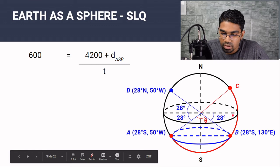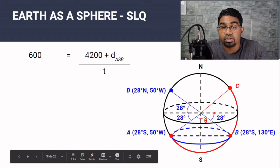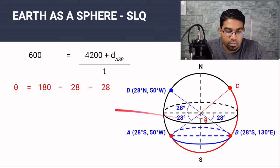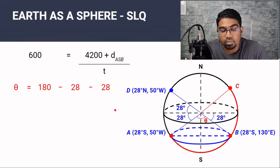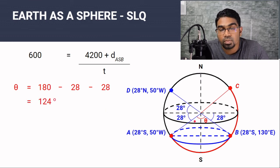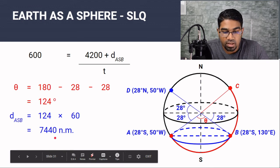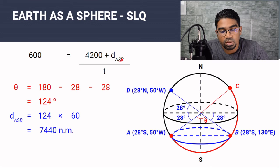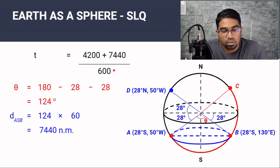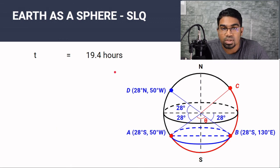To find distance A to B along the great circle through the south pole, we find θ using the vertical number line. Both A and B are at 28 degrees south, so: θ = 180 − 28 − 28 = 124 degrees. Therefore the distance A to B = 124 × 60 = 7440 nautical miles. Substituting back into the speed formula: total time = (7440 + 4200) ÷ 600 = 19.4 hours.